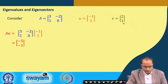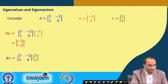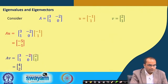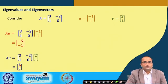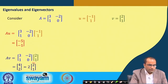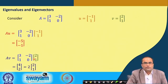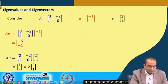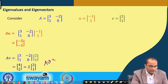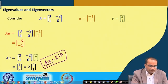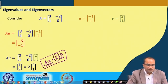If we do the product A times V, we get [6-2, 4+0] = [4, 2]. What is interesting is that this result [4, 2] is nothing but 2 times the vector [2, 1]. So what we observe is that A times V equals 2 times V — the matrix multiplication just scaled V by a factor of 2.